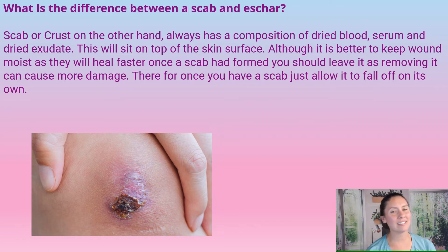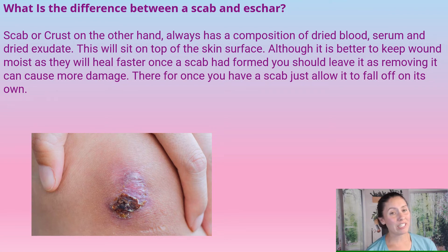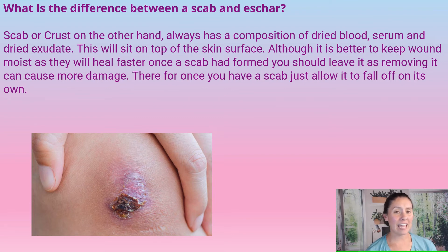On the other hand, a scab or a crust is composed of dry blood, serum, and dried exudate. It sits on top of the skin's surface, so it is raised. Although it is better to keep a wound moist — we now know this — if a scab has formed over a wound, it's just better to leave it.